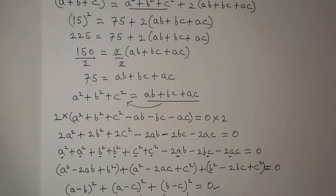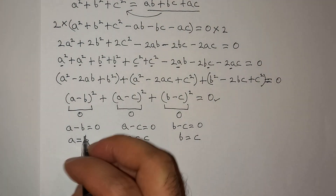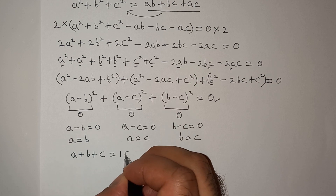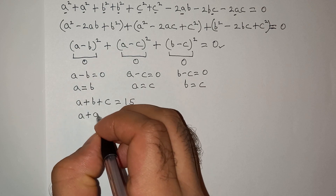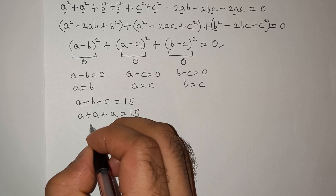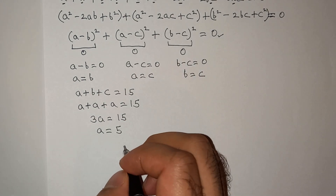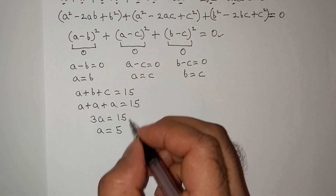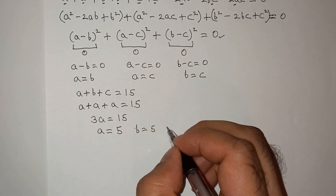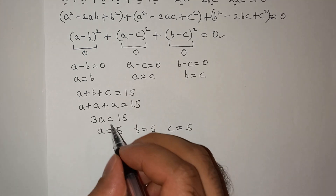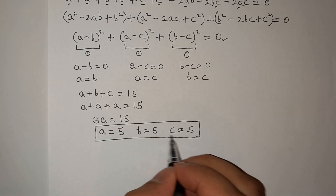Going back to the original equation, a plus b plus c equals 15. Since a equals b equals c, we can write a plus a plus a equals 15, so 3a equals 15, giving a equals 5. Therefore a equals b equals c equals 5. That is our final answer.